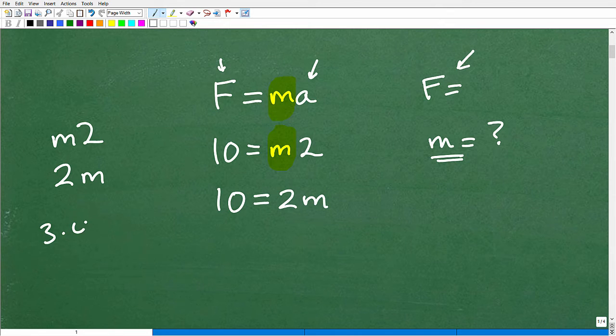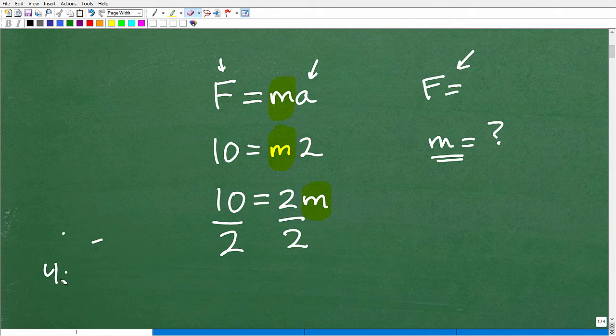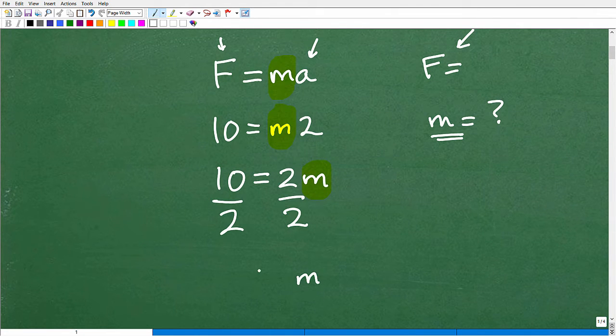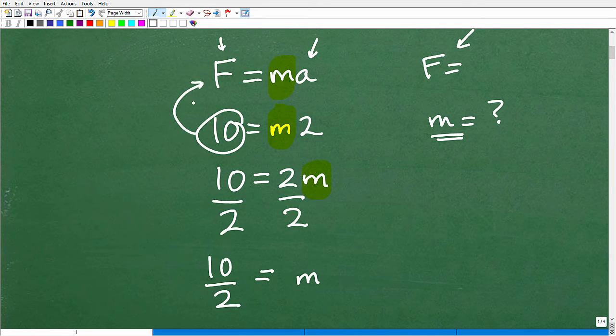10 is equal to 2 times M. Remember, multiplication, 3 times 4 is the same thing as 4 times 3. Order does not make a difference. All right, so here is our M. So if I want to solve for M, I'm going to divide both sides of the equation by 2. So that's what we need to do to solve for M, and then I have right here. Let me kind of give myself a little bit more room. Okay, so M is equal to 10 over 2, but this 10 was kind of like the F spot, right? That was representing the F variable, and this 2 here was representing the A variable.